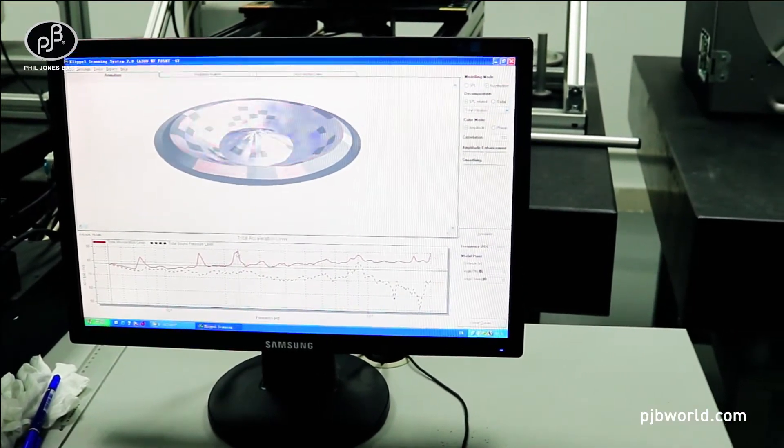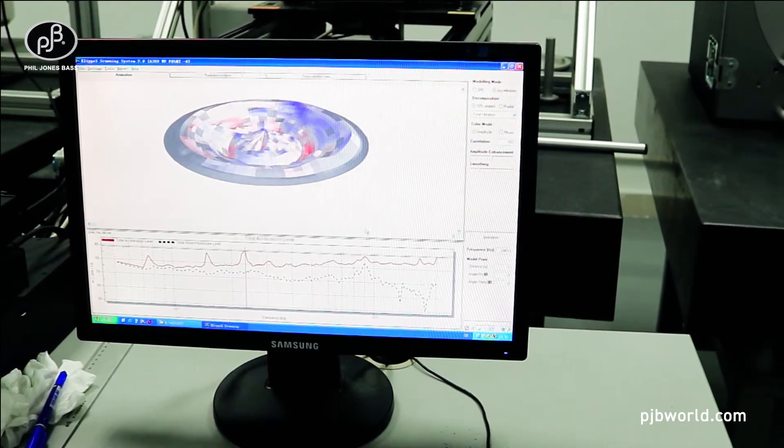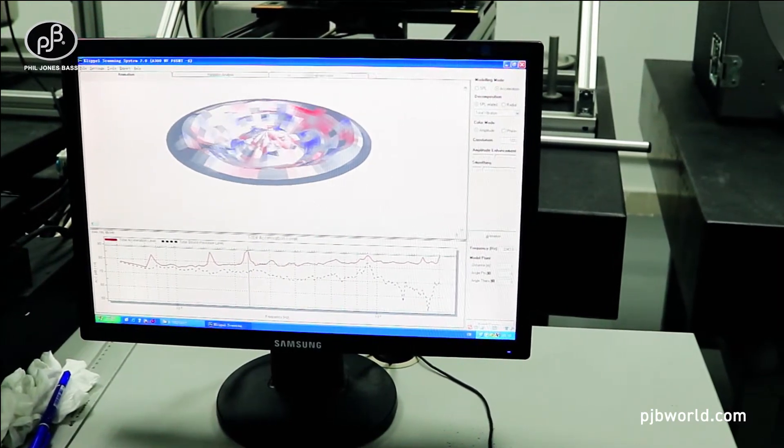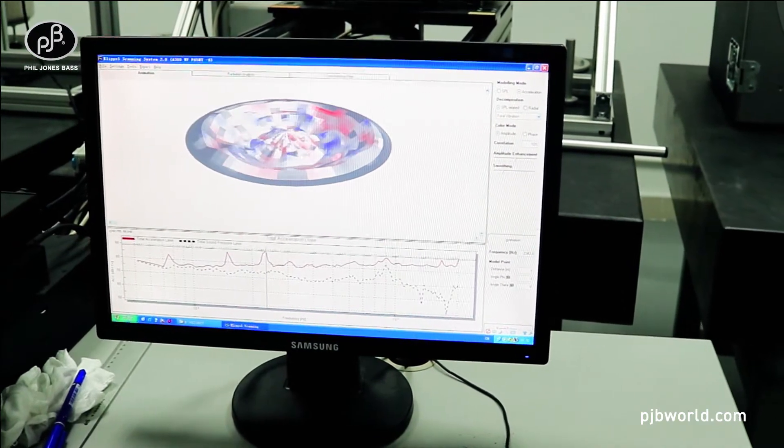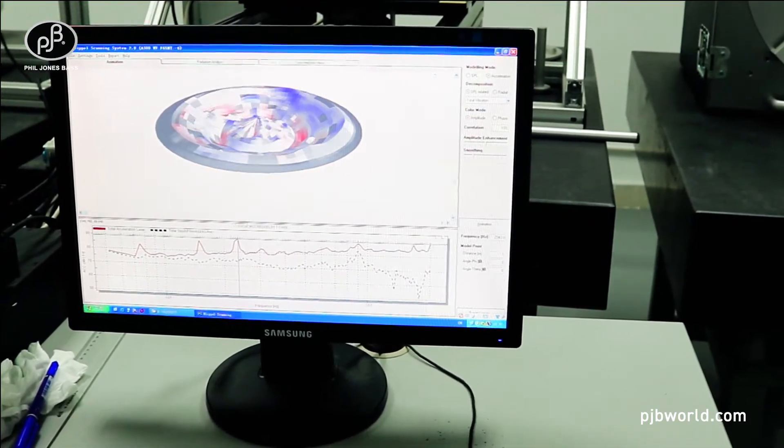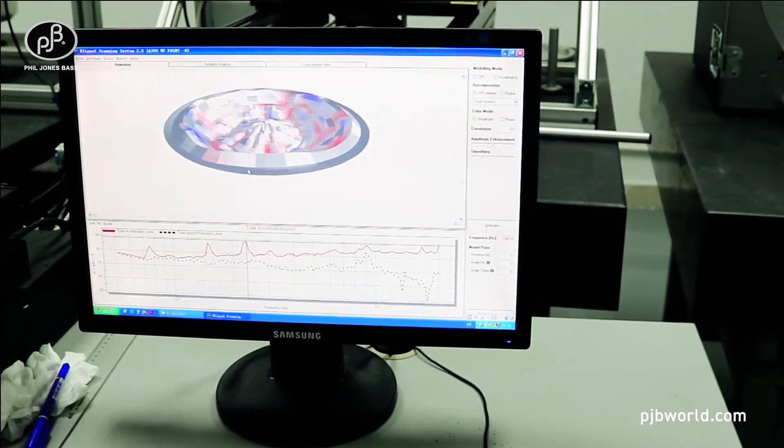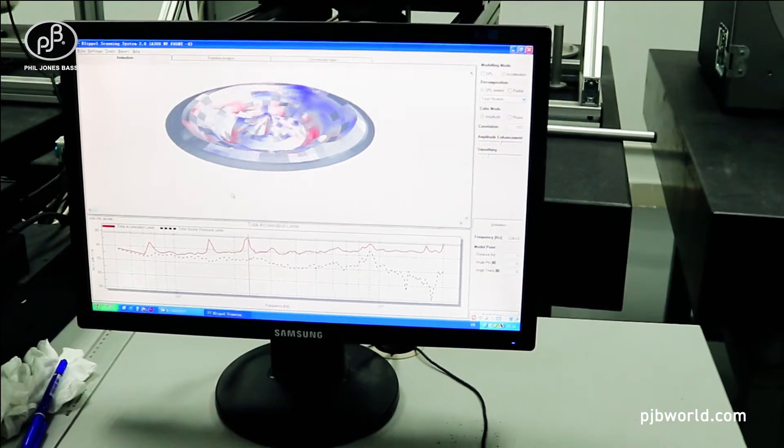But when you get up to frequencies around here, which is 2343.8 Hz, you can see there's very increased parameter on the cone and it actually looks like this when it's running at these frequencies. We exacerbate the magnitude a tremendous amount so we can look in great detail at how the cone is actually behaving.